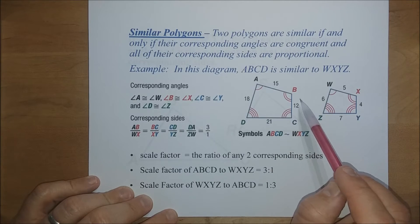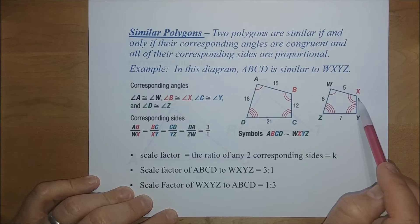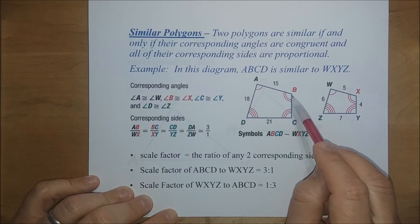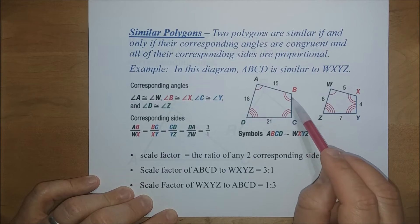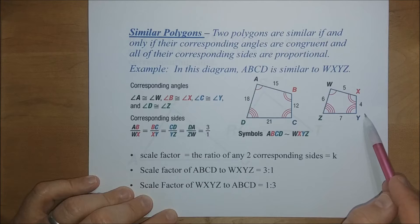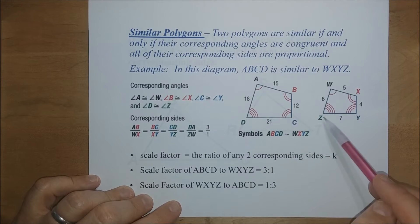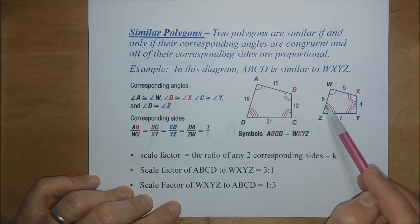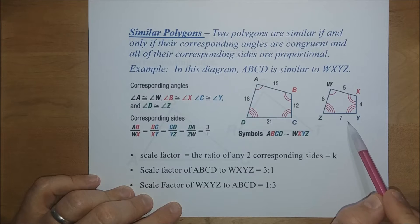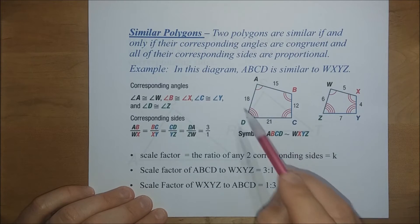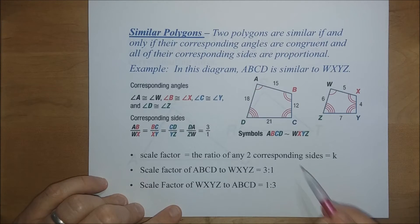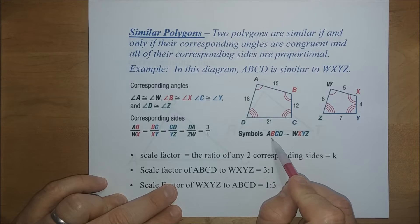If we take corresponding sides: AB to WX is 15 to 5, which is 3 to 1. BC over XY is 12 to 4, also 3 to 1. AD over WZ is 18 over 6, which is 3 to 1, and DC to ZY is 21 to 7, also 3 to 1. So all angles are congruent and all sides are proportional — these polygons are similar, and we write it as polygon ABCD is similar to polygon WXYZ.